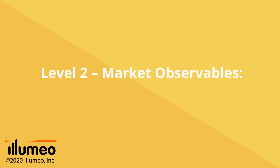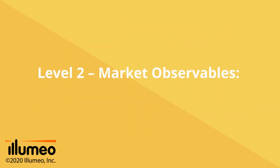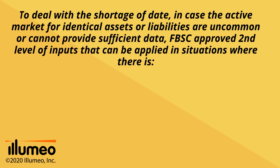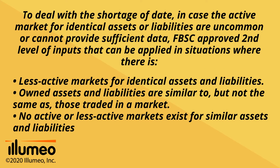Level 2: Market Observables. To deal with the shortage of data when an active market for identical assets or liabilities is uncommon or cannot provide sufficient data, FASB approved a second level of inputs applicable where less active markets exist for identical assets and liabilities. Owned assets and liabilities are similar to, but not the same as, those traded in a market, and no active or less active markets exist for similar assets and liabilities.